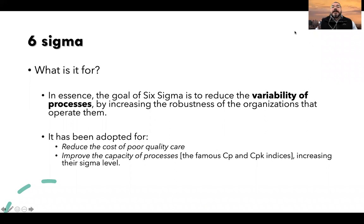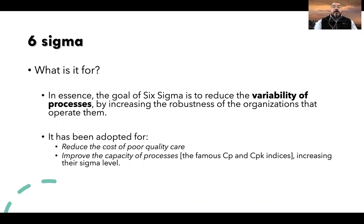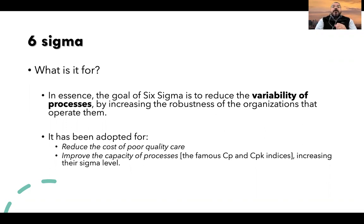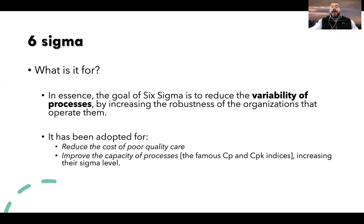Essentially, we use Six Sigma to reduce the variability of processes. Processes tend to have different results, and when we measure specific variables in a process — for example, the time that it takes an operator to perform an activity — it will vary across time and from measurement to measurement, and we want that variability to be as small as possible.